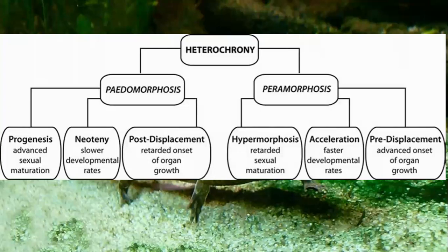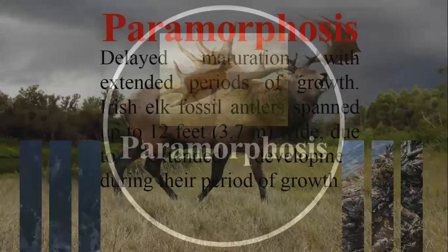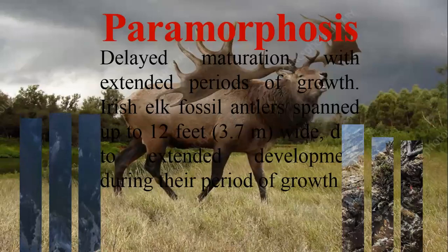Now we can discuss the mechanism of peramorphosis. In peramorphosis we discuss two types: hypermorphosis and acceleration. In hypermorphosis there is retarded sexual maturation, while acceleration involves a relatively faster developmental rate, similar to pedomorphosis but in reverse. Peramorphosis involves delayed maturation and extended periods of growth.